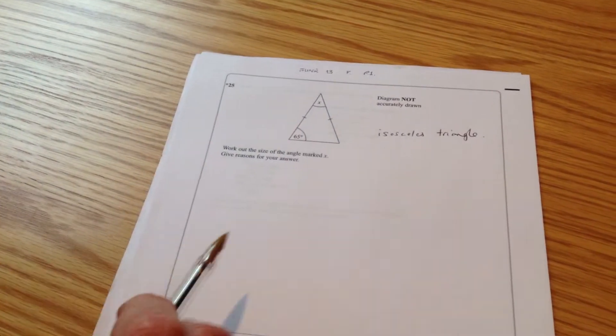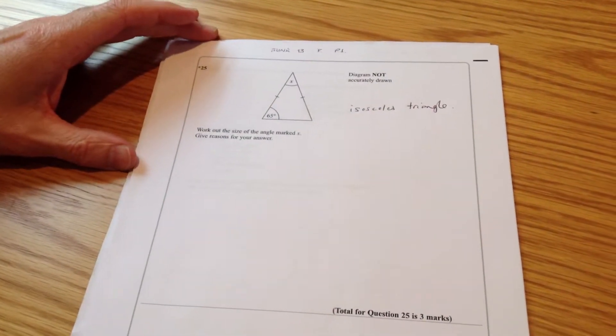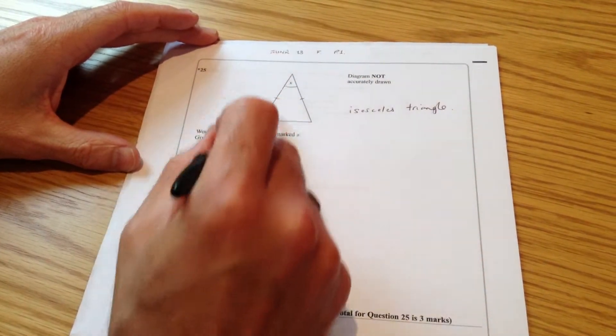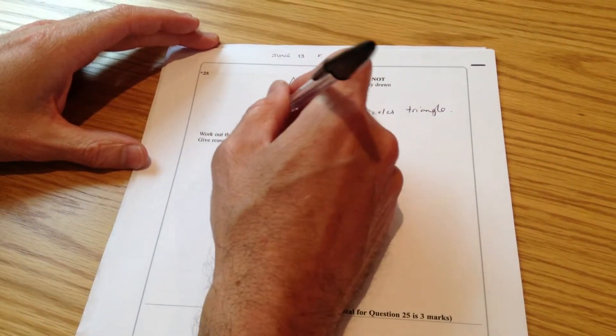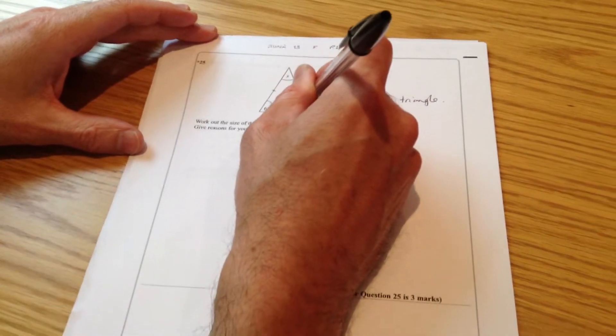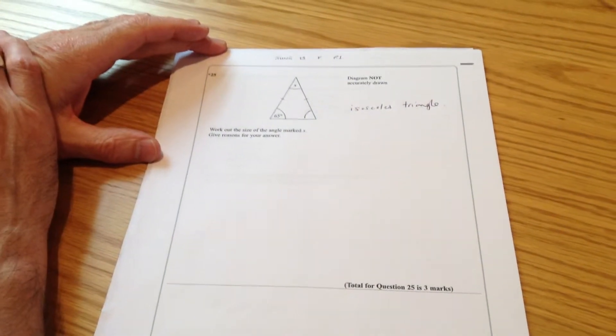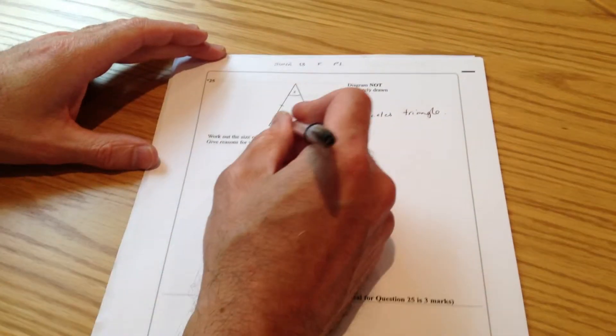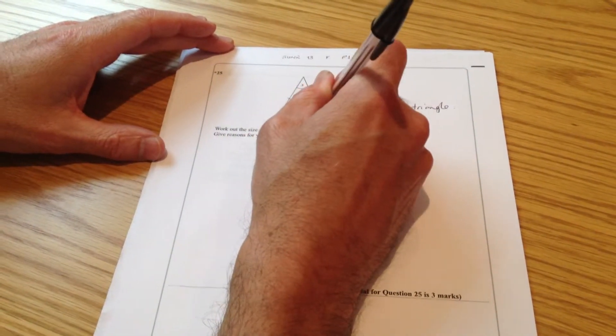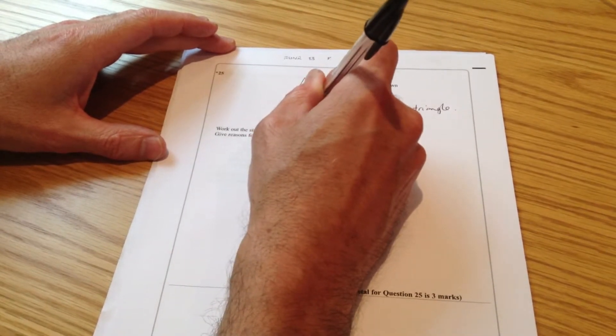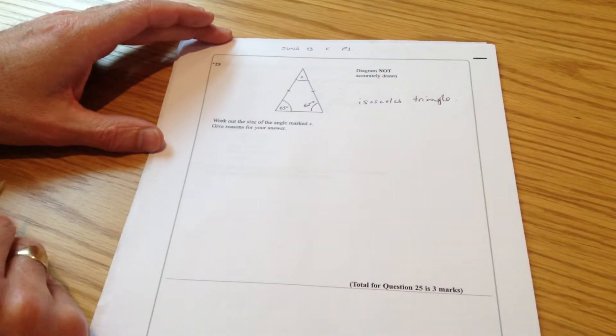Now the thing that we know about isosceles triangles is yes, they have two equal lengths, but also the angles at the bottom of those lengths are also the same. So if that's 65 degrees, that is also 65 degrees.